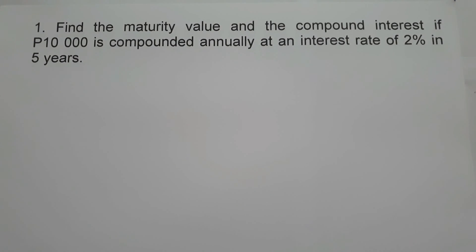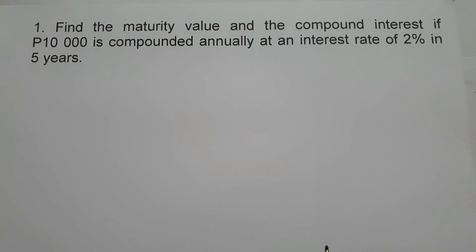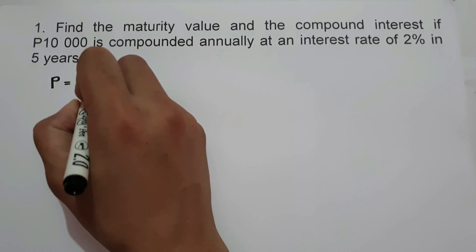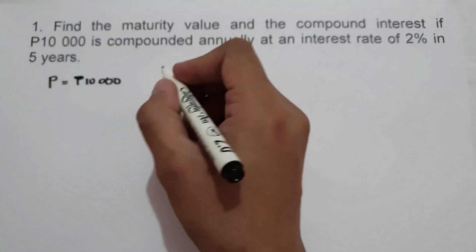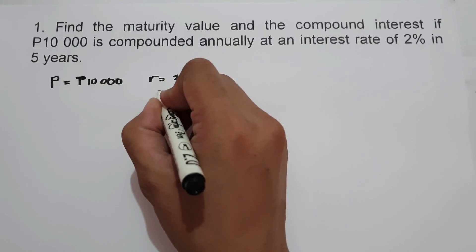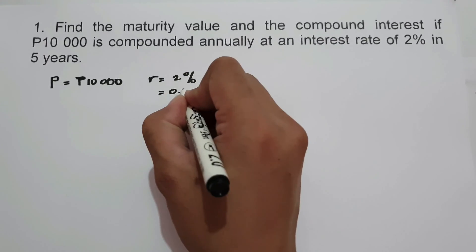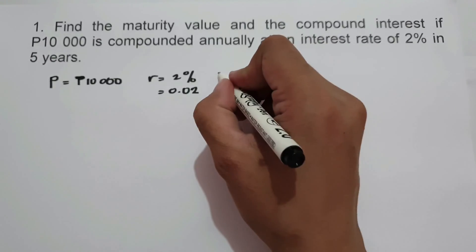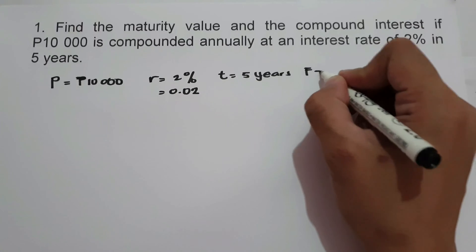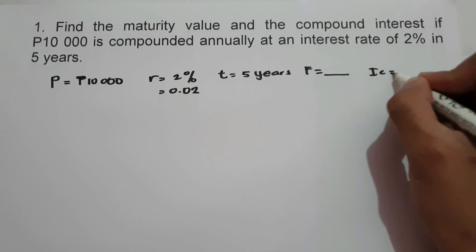On the first example, find the maturity value and compound interest if 10,000 is compounded annually at an interest rate of 2% in 5 years. So let us determine first the given. Since we have 10,000, that is our principal. Then we have rate, that is 2%, which should be written in decimal, so that is 0.02. And then time is 5 years. We are looking for the future value and compound interest.